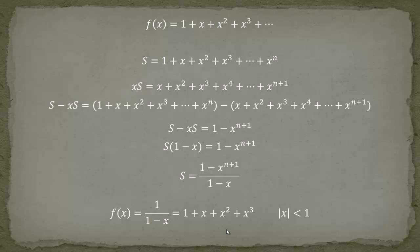Before continuing, remember that when multiplying by x, we required x not equal to zero. But we can go back and check: if we plug x equals zero into the original sum or into the formula 1/(1 minus x), we get 1 over (1 minus 0) which equals 1. So the formula is valid even at x equals zero, which is why I stated the condition as |x| < 1.